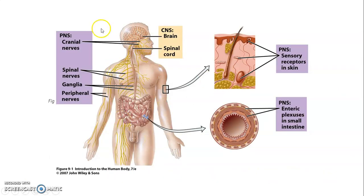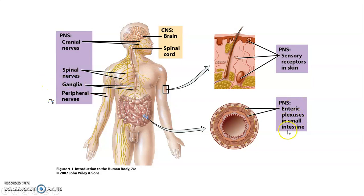From this image, you can see the nervous system divided into the central nervous system — brain and spinal cord — and the peripheral nervous system with cranial and spinal nerves. We also have ganglia, which are collections of neuronal cell bodies outside the CNS. The peripheral nervous system also includes enteric plexuses within the GI tract, which are part of the Autonomic Nervous System.